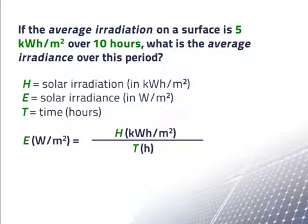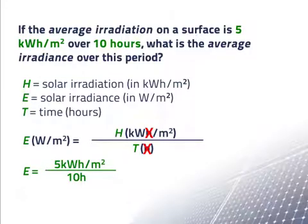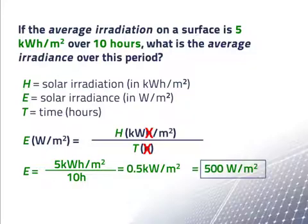We'll carry the units to keep them straight, and we will see that the hours in the numerator and denominator cancel. Plugging in, we find that 5 kilowatt hours divided by 10 hours equals 0.5 kilowatts per meter squared, or 500 watts per meter squared.